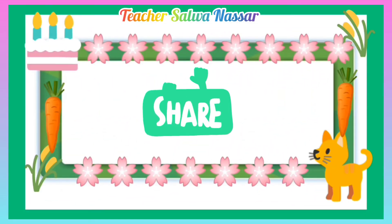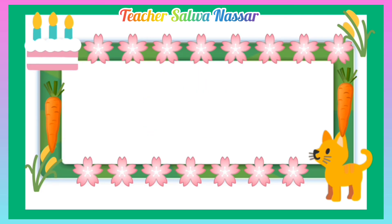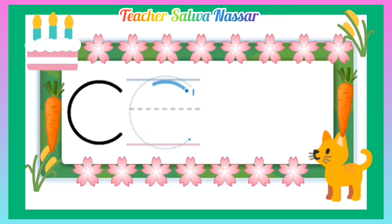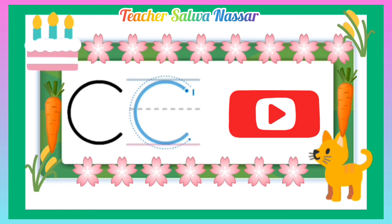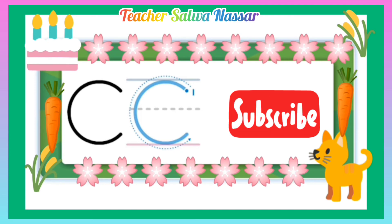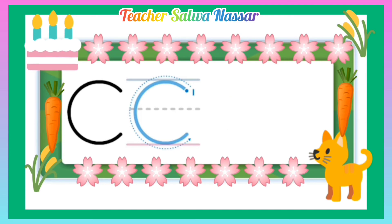It's time to learn how to write capital C and small c on lines. Capital C is a big semicircle that starts from line one to line three. As for small c, it's a small semicircle between line two and line three.